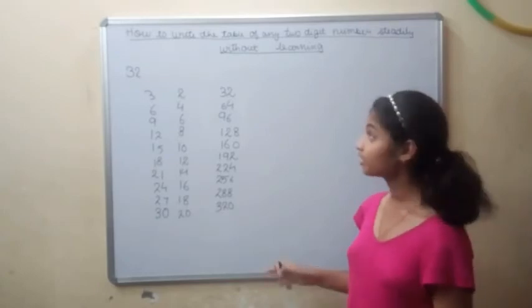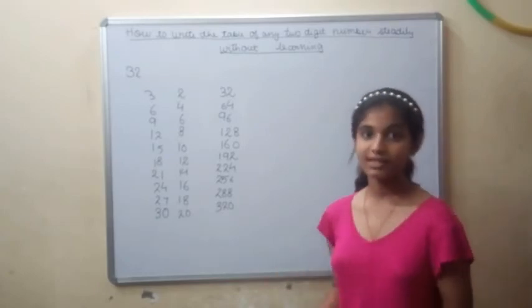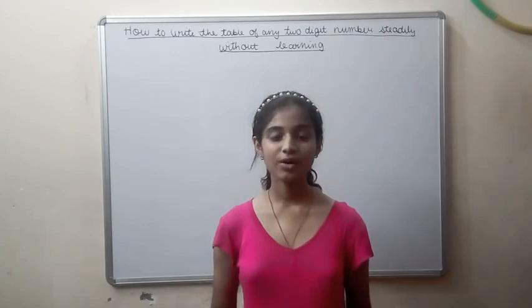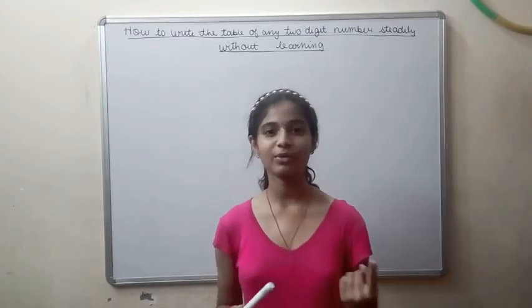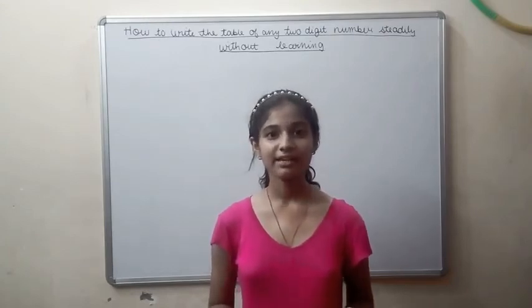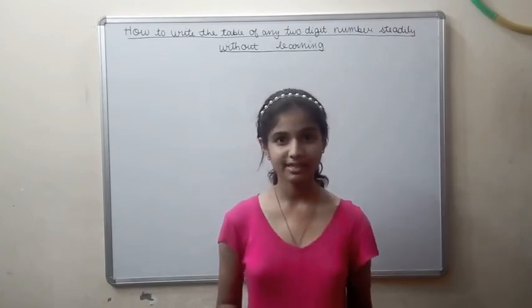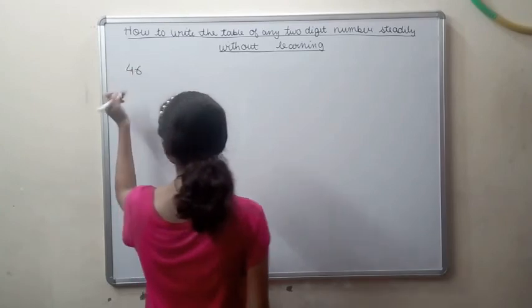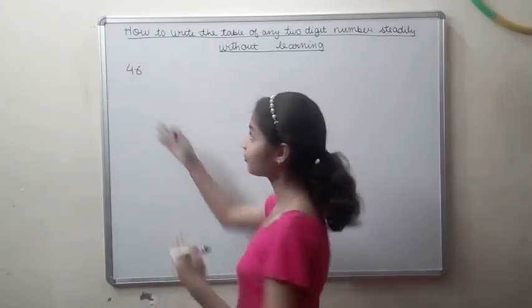So again we have got the table of 32. So now like this we can take out more complex examples. So like this we can do all the tables. So now for your better understanding I will give you one more example. Like we can take the example of 46. Let's take the example of 46.